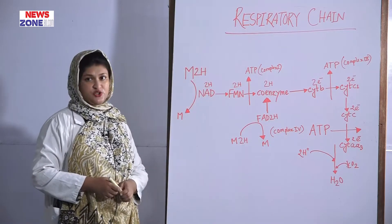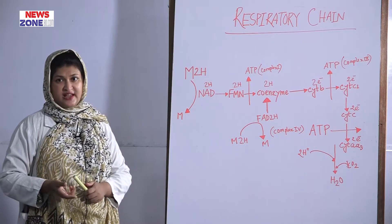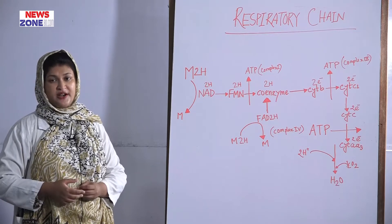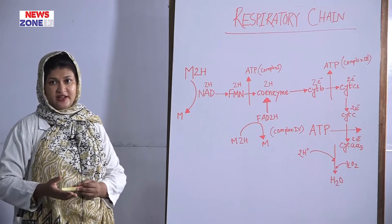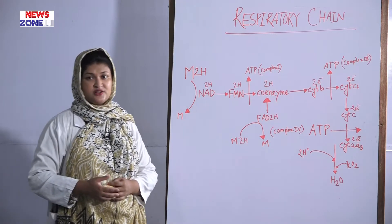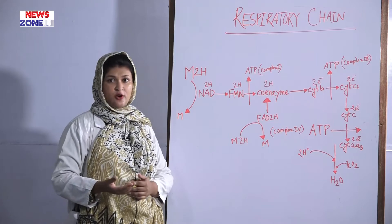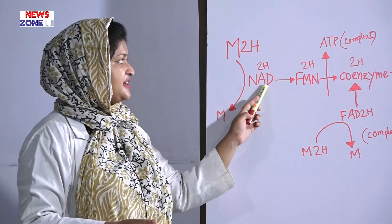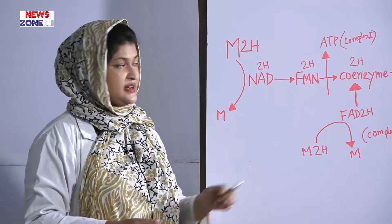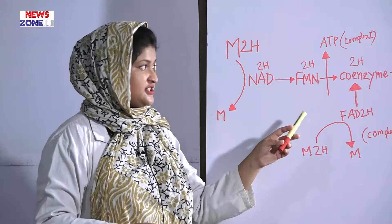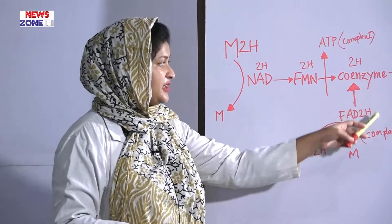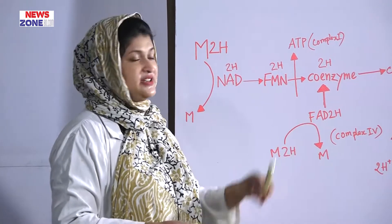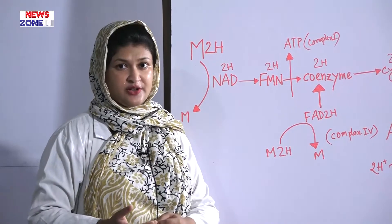The components of the respiratory chain that will be oxidized are of two types: hydrogen carrier components and electron carrier components. Hydrogen carrier components are NAD (nicotinamide adenine dinucleotide), FMN (flavin mononucleotide), coenzyme Q (also known as ubiquinone), and FAD (flavin adenine dinucleotide).